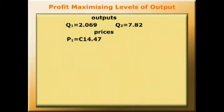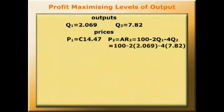We can easily find out the optimum price for market 2. P2 equals AR2 equals 100 minus 2Q1 minus 4Q2. And we've worked out what Q is in each case. So that gives us 100 minus 2 times Q1 was 2.069 minus 4 times Q2 was 7.82.